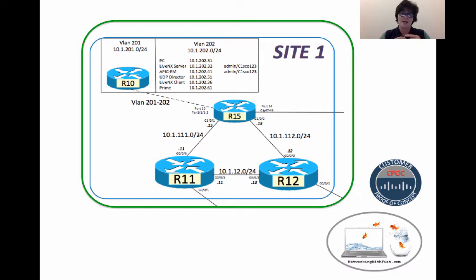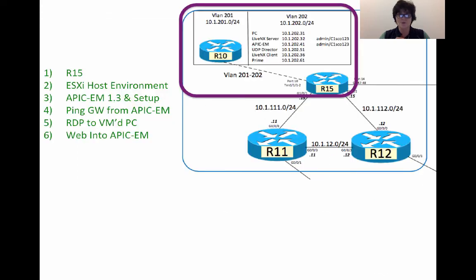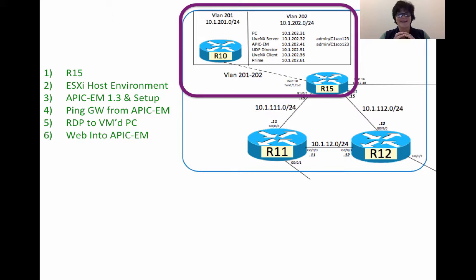R15 has a 10 gigabit interface trunk link up to the ESXi environment, where VLAN 201 and 202 are. We're going to focus in on R15 first and do a show interface trunk. We'll see that I only have one of those 10 gig interfaces up — I haven't connected up the other Fabric Interconnect.